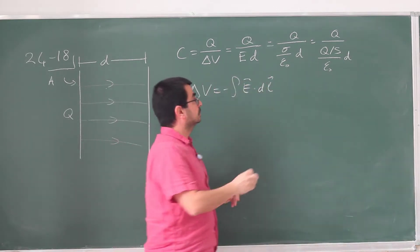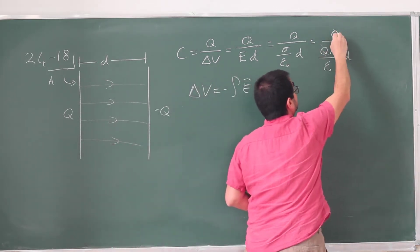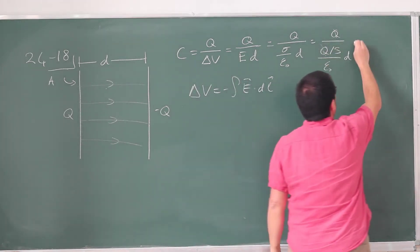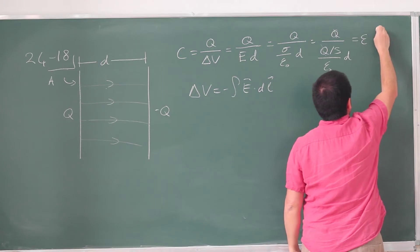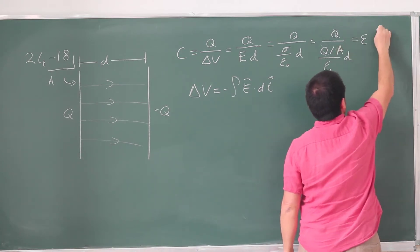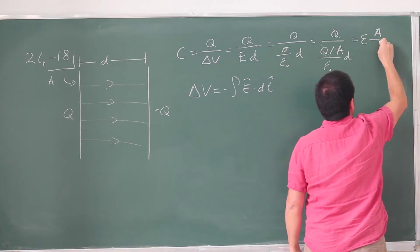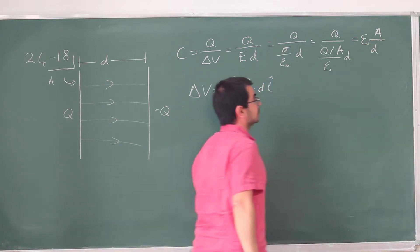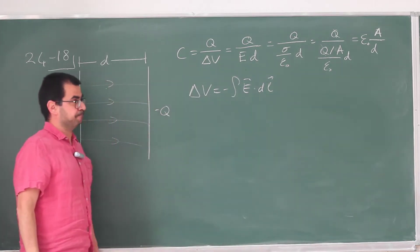So as expected, as it should be, Q's just go away. This moves to the numerator, this moves to the numerator, and we have ε₀, sorry, they're actually using A here, so I'm going to switch to their notation. You get this, ε₀ times the surface area divided by distance between the plates.